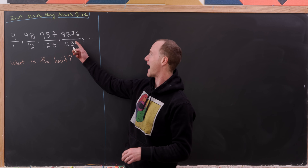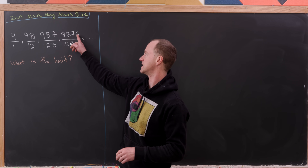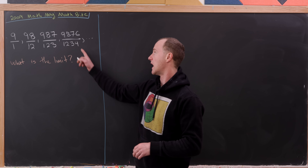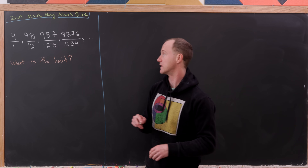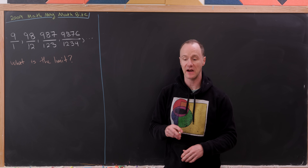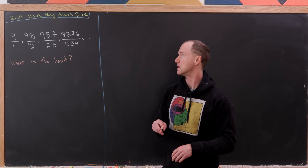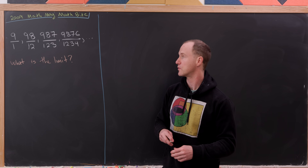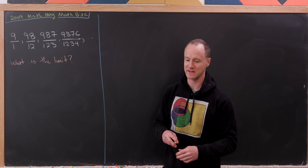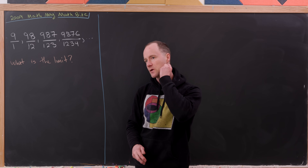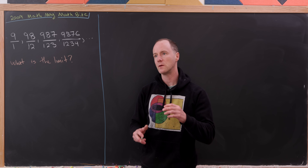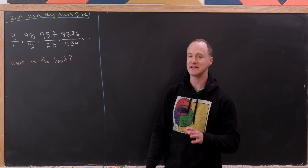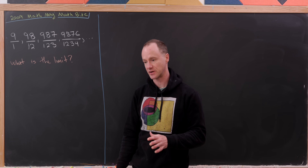As we move forward, the next one will end with a 5 in the numerator, and the one after that will end with a 5 in the denominator. The one after that will end with a 4 in the numerator and a 6 in the denominator. What the limit of this sequence is actually depends on your interpretation.